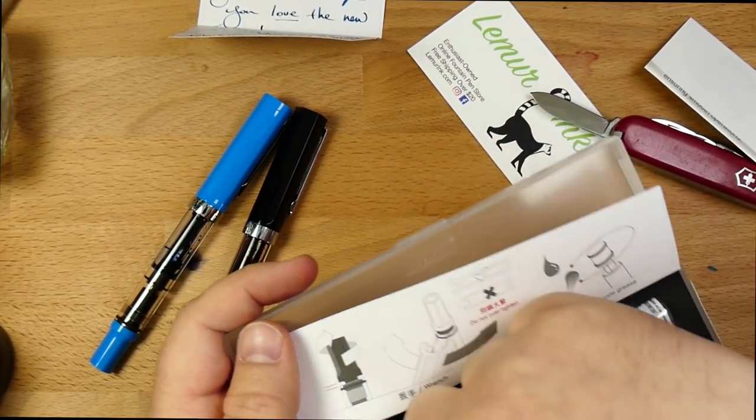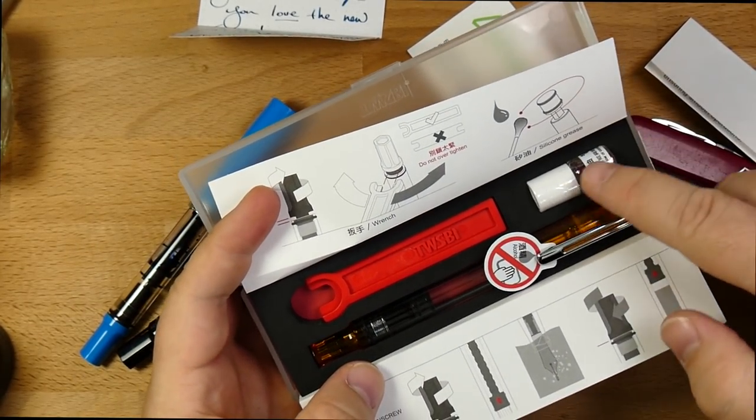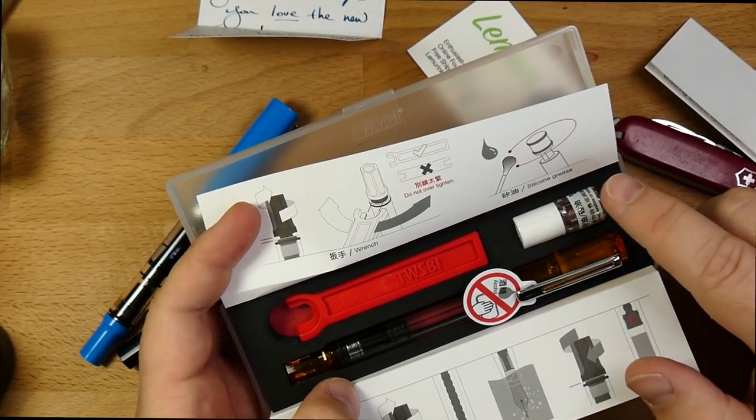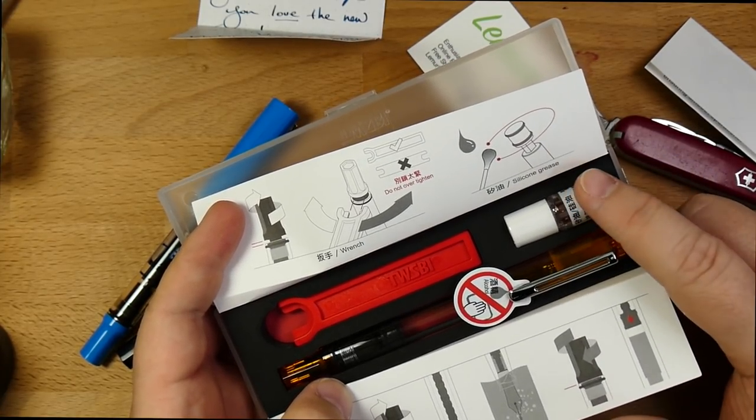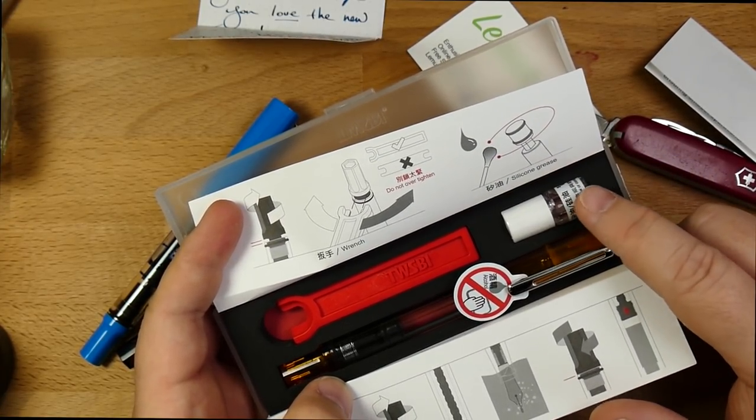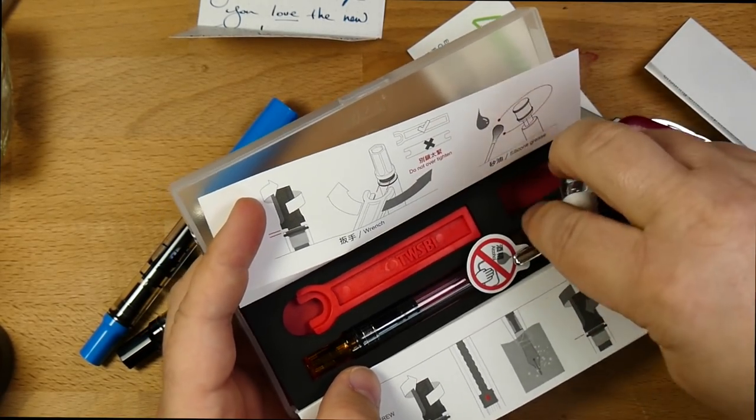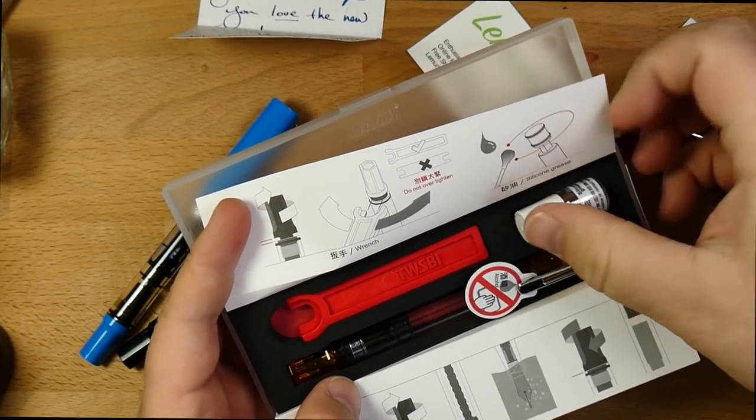Alright. So, there's our plastic wrench. Right here, we got a little bottle of silicone grease. This is not, by the way, the kind of grease that you'll use to eyedropper a pen. Don't try it. It won't work out very well. It's not what this is for. This is for lubricating pistons and such. But for that use, plenty good.